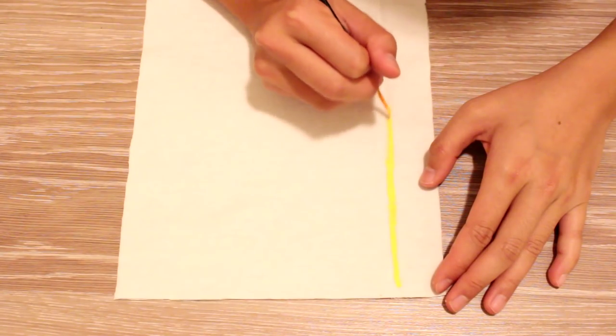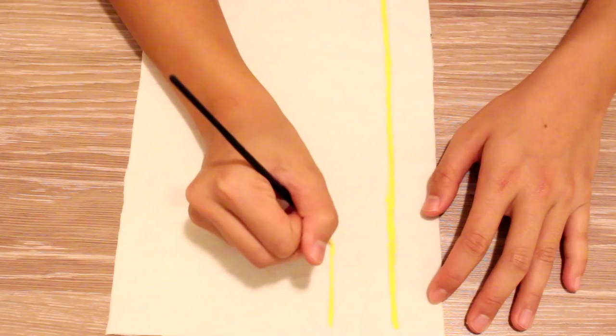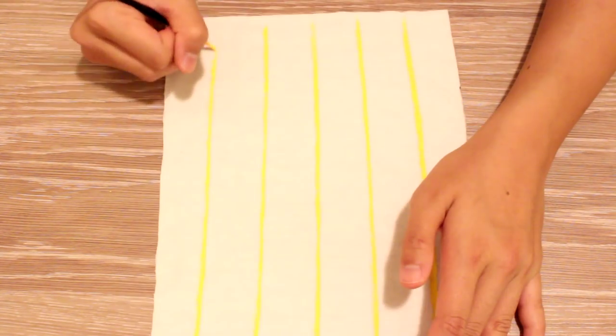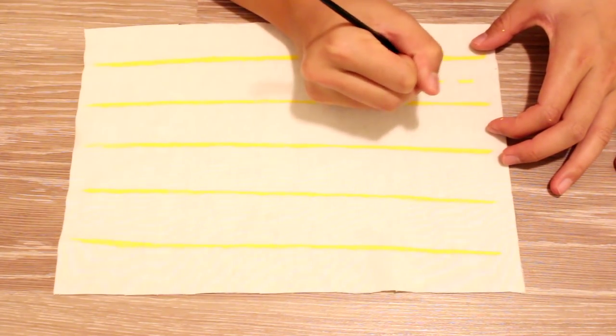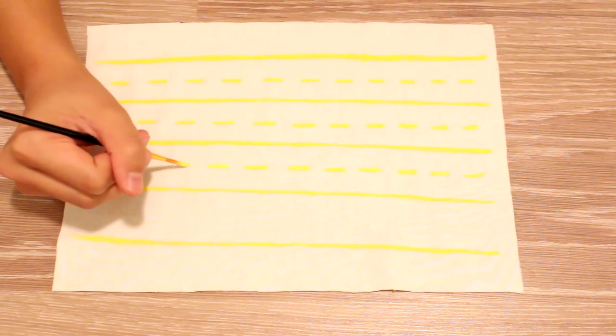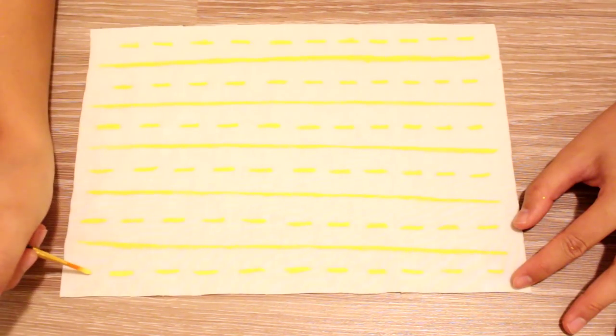For my liner, I used some yellow paint and just drew some straight lines along the entire fabric. I then drew dashed lines between the straight lines to come up with this really cute design. The liner design is entirely up to you, you can draw whatever your heart desires.